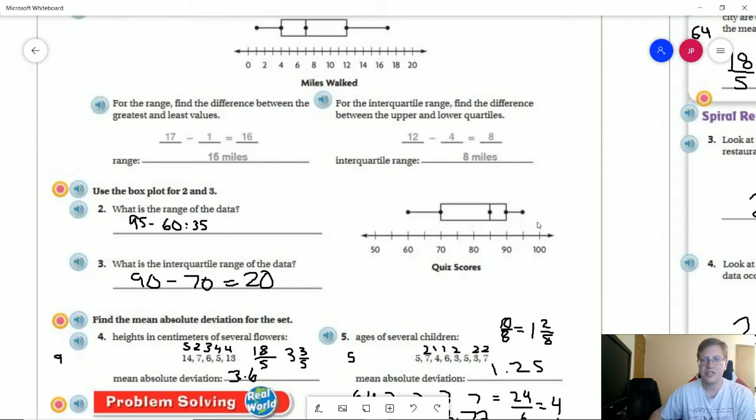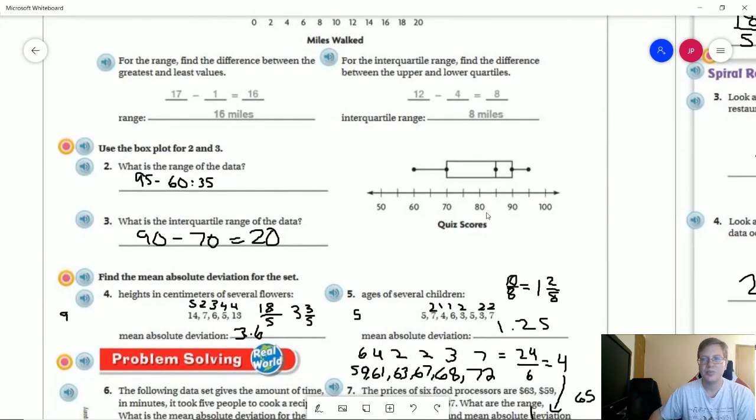For number two, for the range, we're working with 95 minus 60, which is going to give us a range of 35. For number three, our upper quartile is 90, our lower quartile is 70. When we subtract those values, we get an interquartile range of 20.